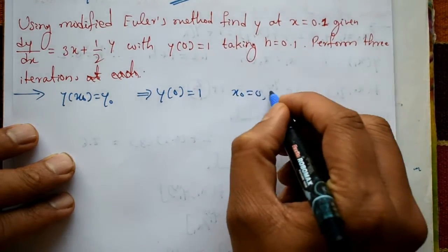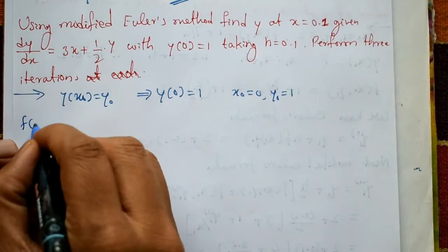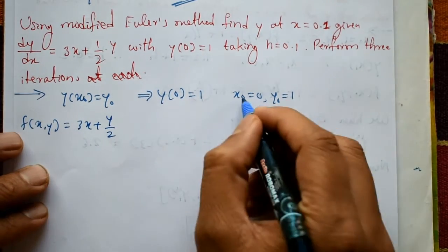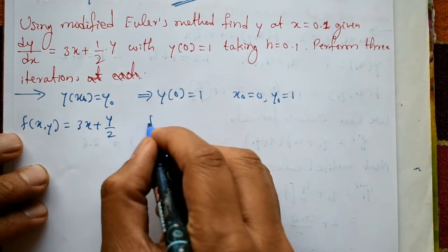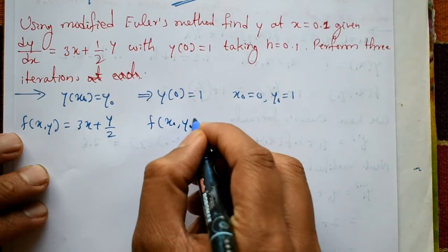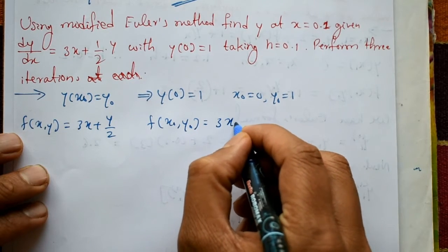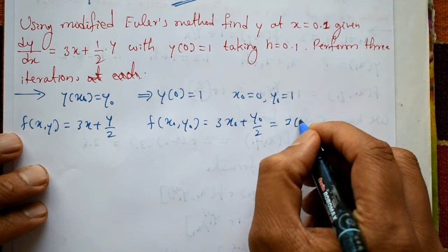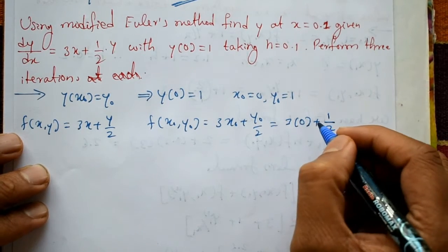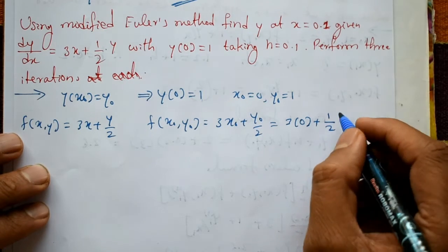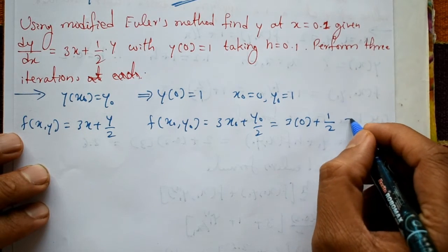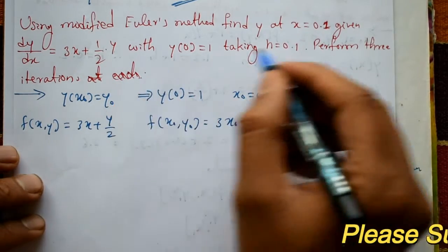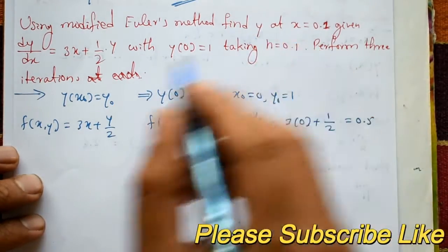So x0 = 0 and y0 = 1. The function f(x, y) = 3x + y/2. Using the initial condition, f(x0, y0) = 3(0) + 1/2 = 0.5. So f(x0, y0) = 0.5.